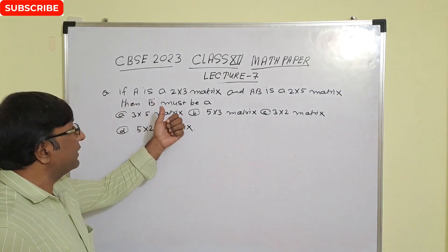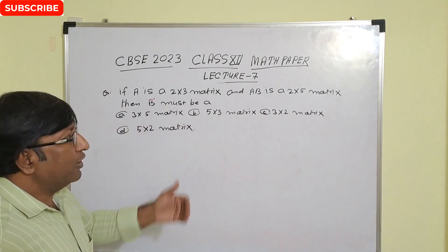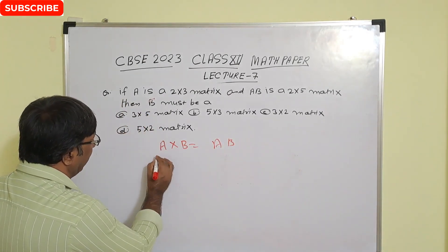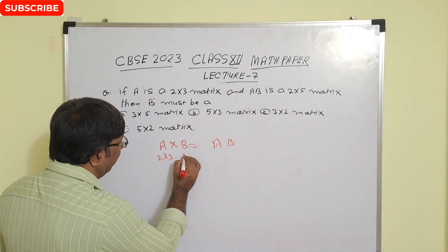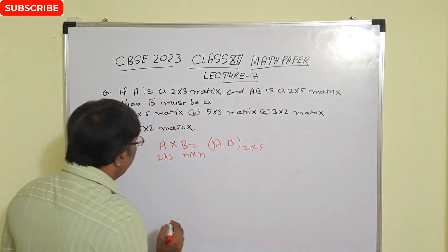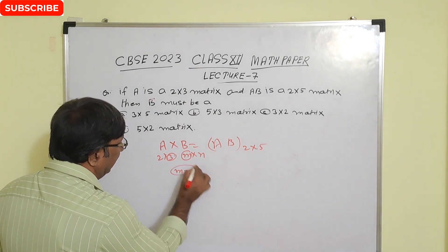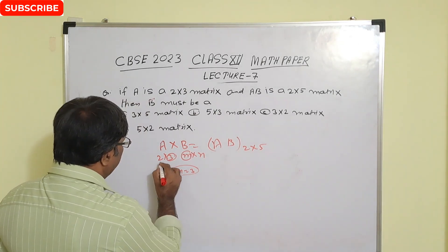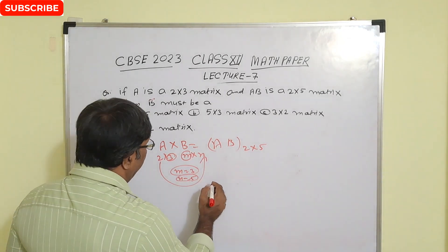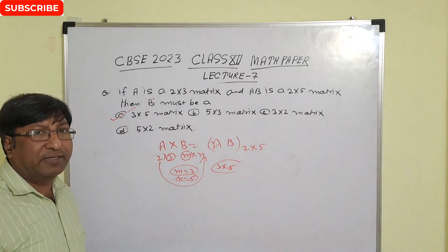Next question: if A is a 2×3 matrix and AB is a 2×5 matrix, then B must be of what order? We know A×B = AB. Matrix A has order 2×3. The number of columns in A must equal the number of rows in B, so M = 3. The product AB is 2×5, so N = 5. Therefore the order of B is 3×5. Option A is the correct answer.